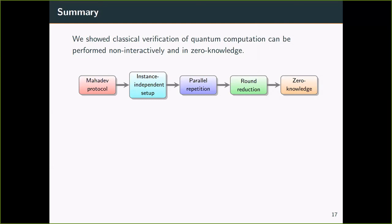In summary, we show classical verification of quantum computation can be performed non-interactively and in zero knowledge. This is done by upgrading the Mahadev protocol in a few steps. First, we show that the key generation can be made instance independent. So this can be done in the setup phase. Next, we show that the soundness error can be improved by applying parallel repetition. Also, we show that the round complexity can be reduced by applying Fiat-Shamir transform to a single message. Finally, I also presented a classical non-interactive zero knowledge for BQP or QMA.